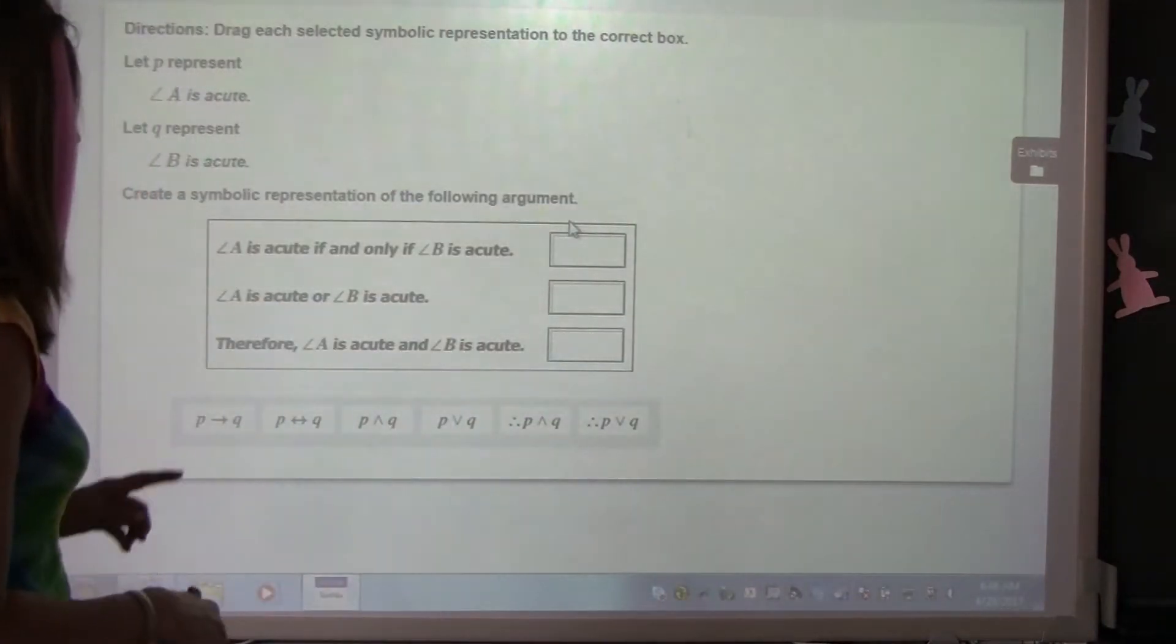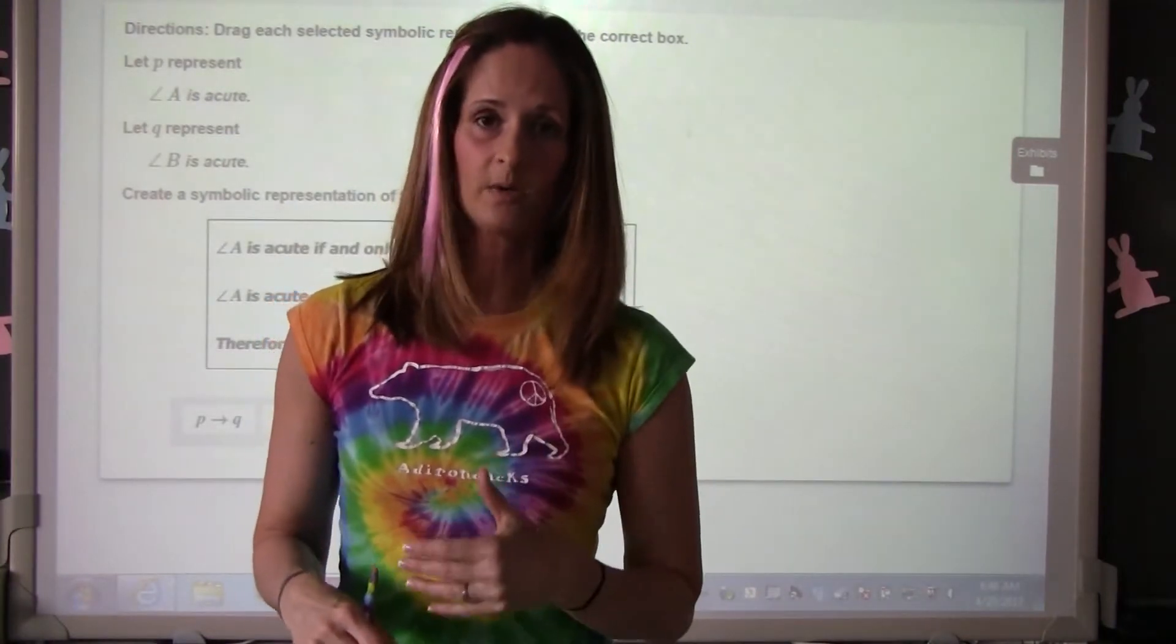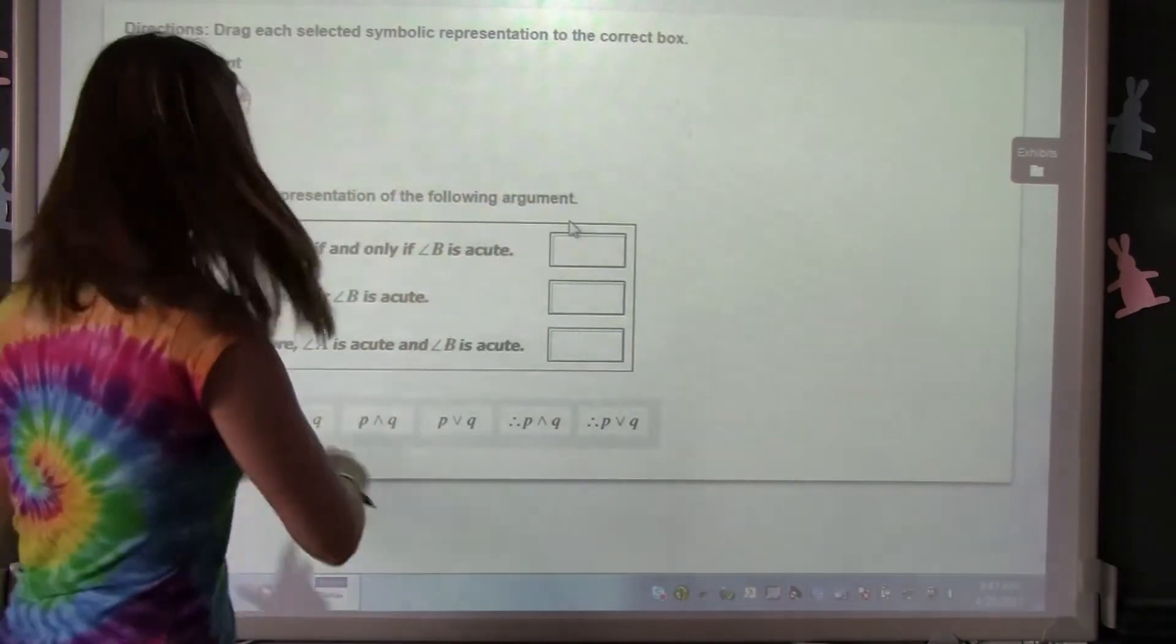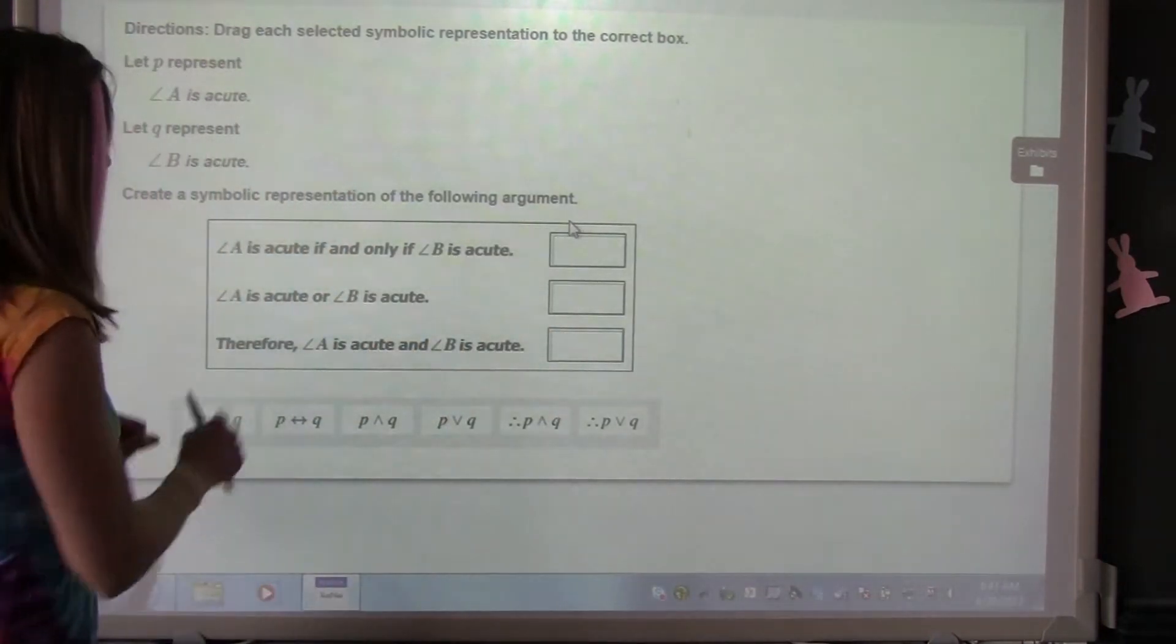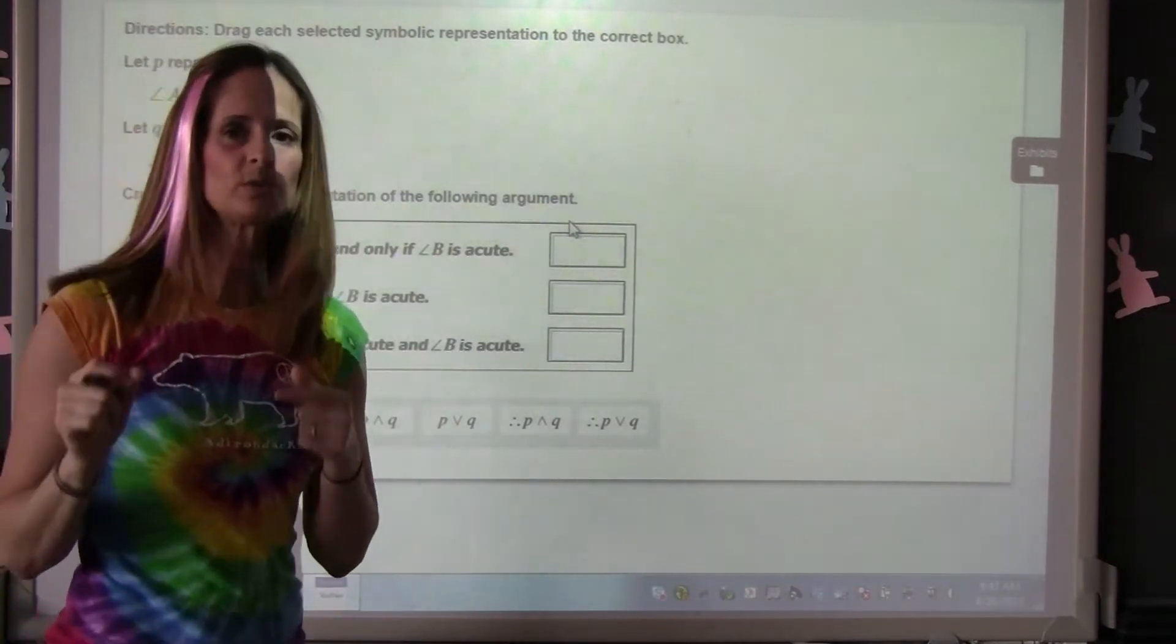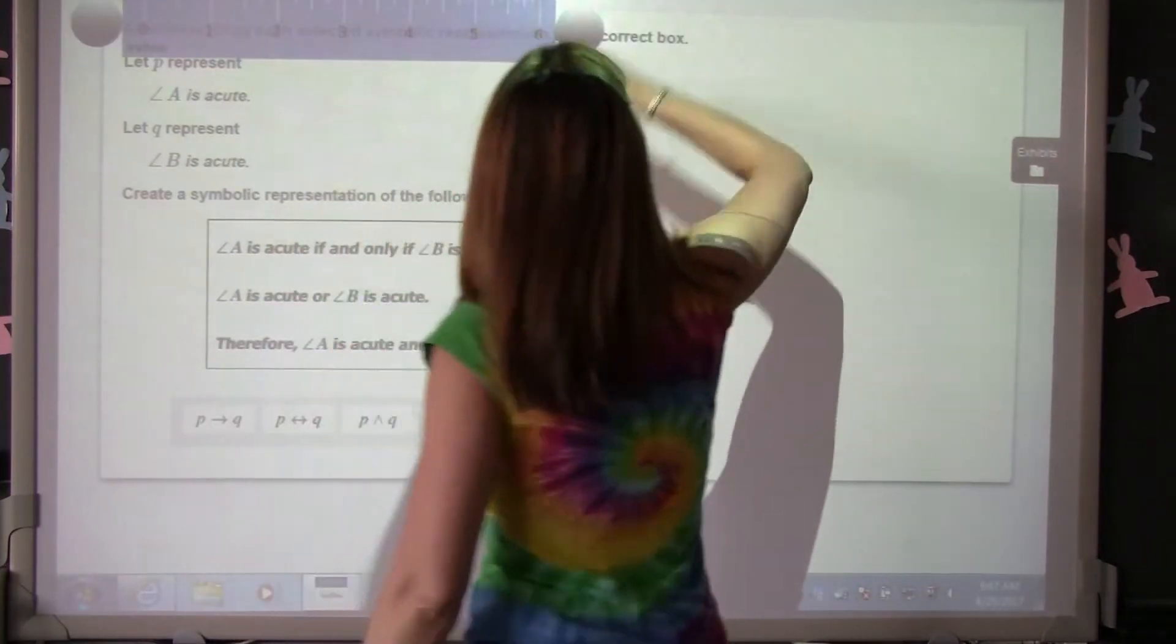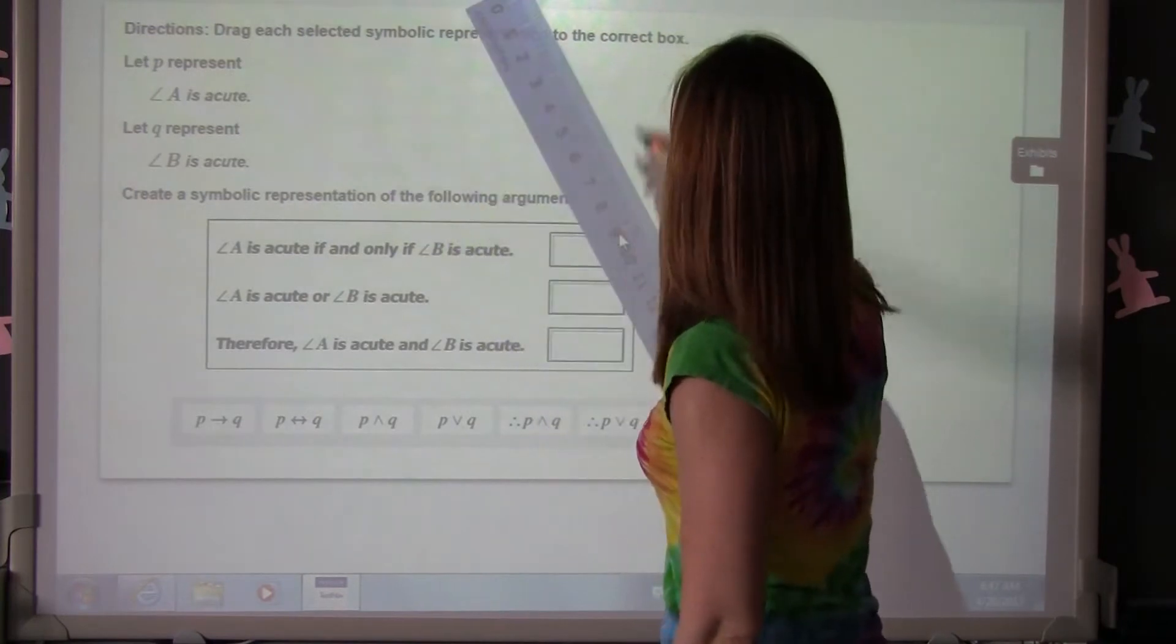This is a standard type of technology-enhanced question that you will see on the SOL. Make sure you read it carefully. The directions say drag each selected symbolic representation to the correct box. So your answers are down here, and you will pick those and put them in the right boxes. The only tools that are available for this particular question are up here. We have an inch ruler and a centimeter ruler, which you can kind of drag around and do whatever you need with.